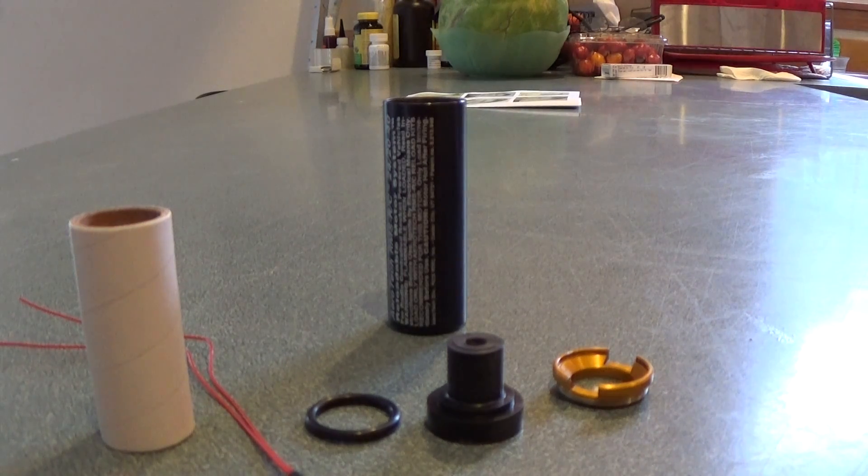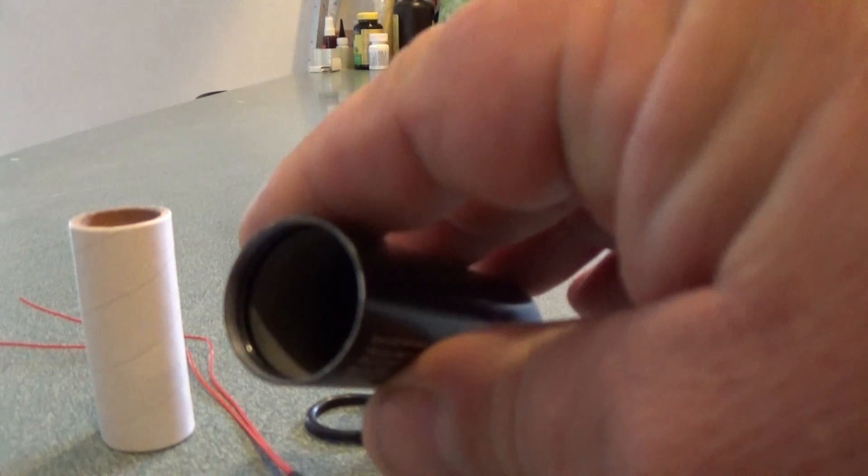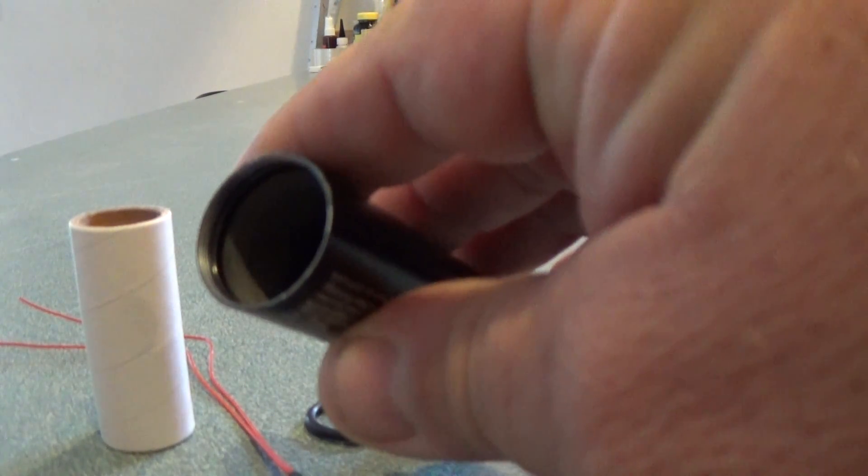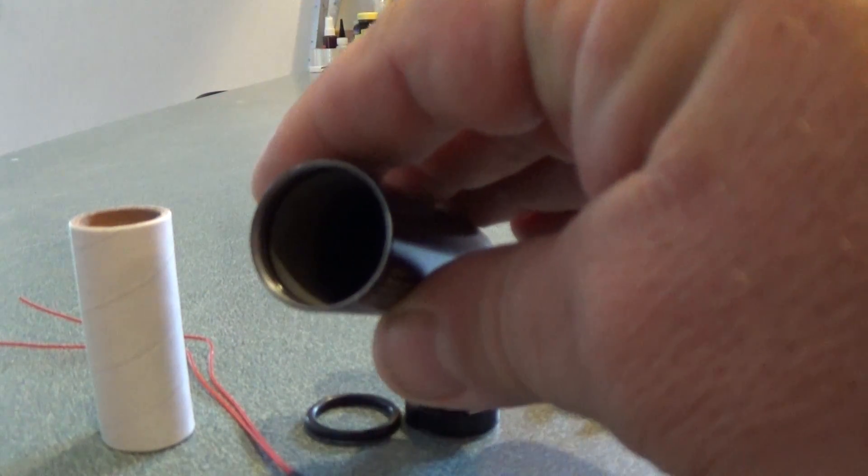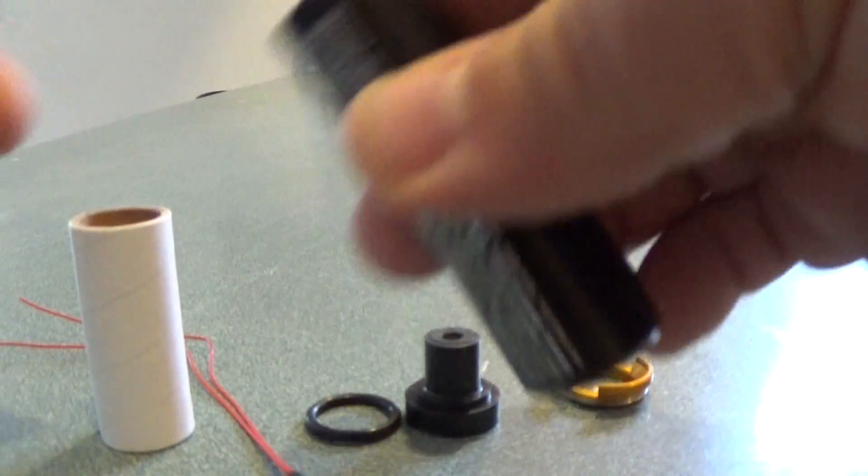So the next thing you're going to do is you're going to put some high temp grease in the threads and inside the casing. I use a Super Lube. It's a synthetic grease I get from Ace Hardware. So you're just going to put that on the inside of the case and on the threads.